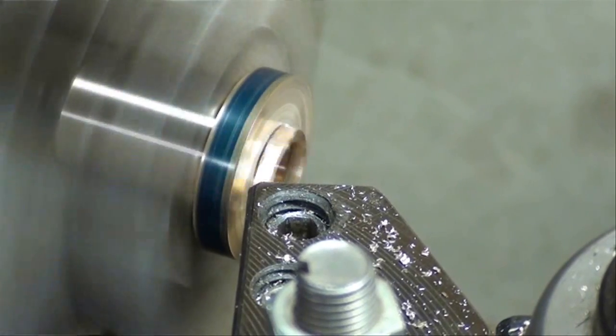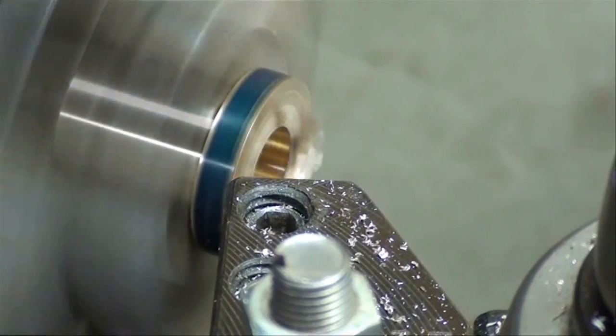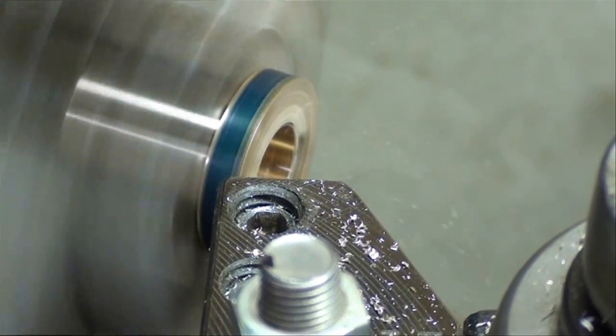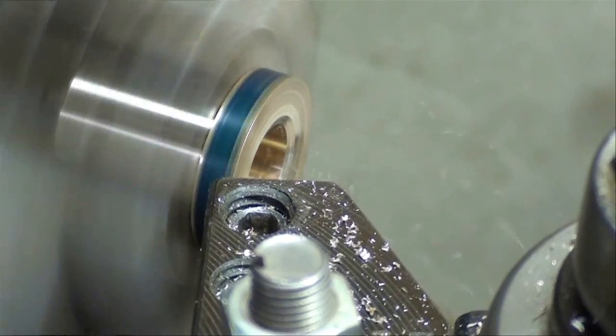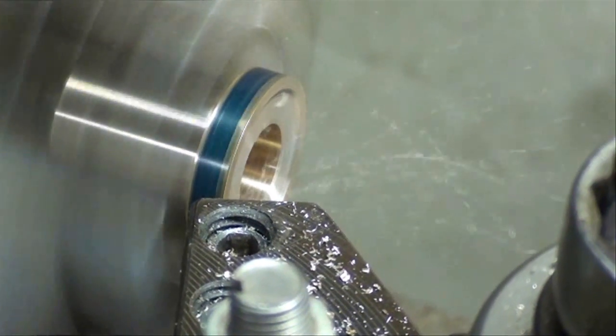Now I've got the work held end for end in the three-jaw chuck, and I'm going to face off the flange, so that burr comes off first. I'm going to face it off until I've got a flange that is 1/8.